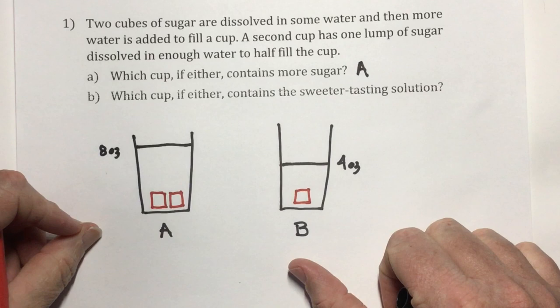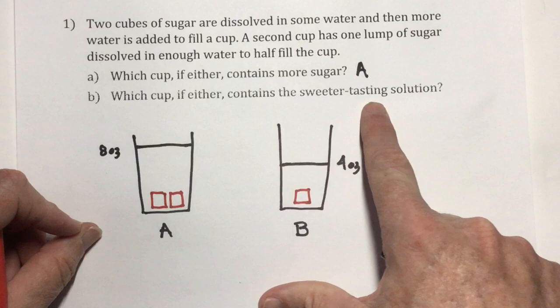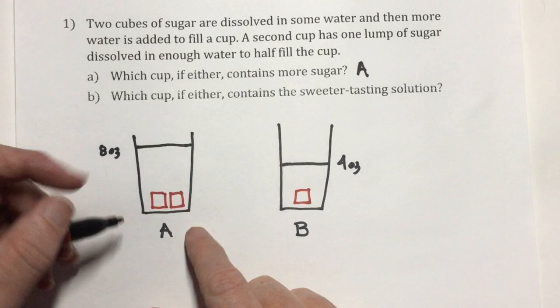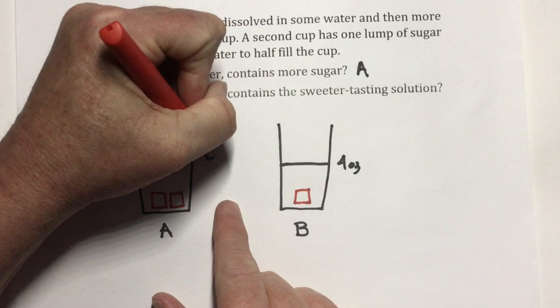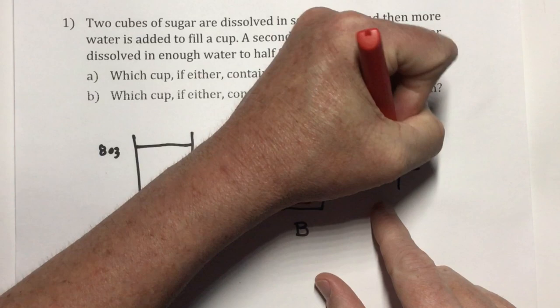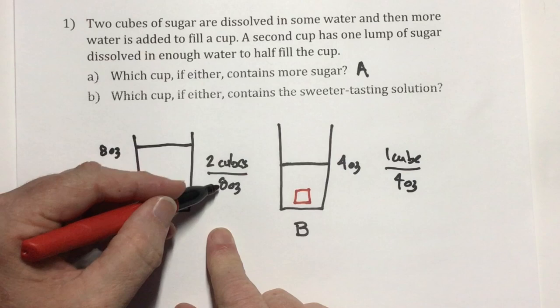Question B: which cup, if either, contains a sweeter-tasting solution? The sweetness is based on the concentration of sugar in the water — the solute in the solvent. On a cube-per-ounce basis, cup A has two cubes in eight ounces, and cup B has one cube in four ounces. Two cubes in eight ounces is equivalent to one cube in four ounces, so neither — they're both the same concentration.